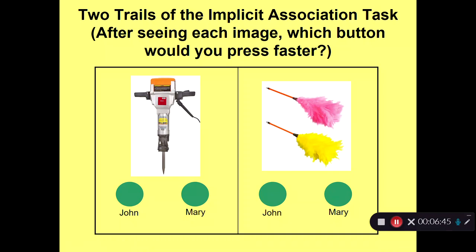Because you're doing it so fast you can't even think about it, after you did that you might have felt a little bit badly—was it a stereotype response to press John when I saw the jackhammer and Mary when I saw the feather dusters? This is a very nice example of the interaction between automatic and controlled processes. Your automatic response was to associate the jackhammer with John and the feather duster with Mary, but maybe in a controlled way you thought about that later, guided by your internalized desire not to feel prejudice or stereotype on the basis of sex.